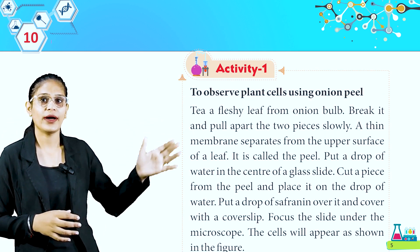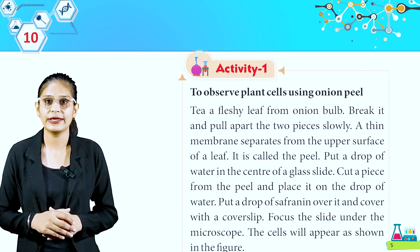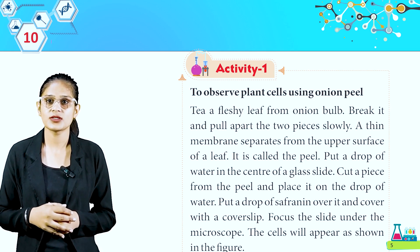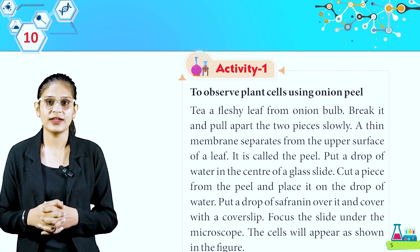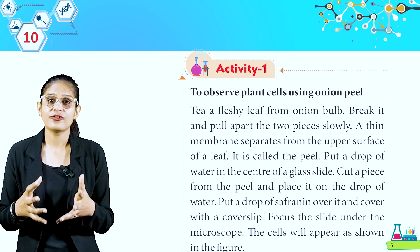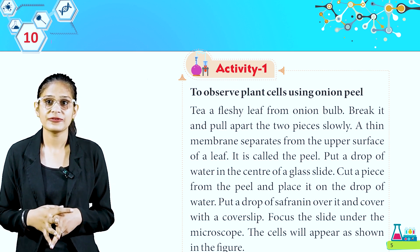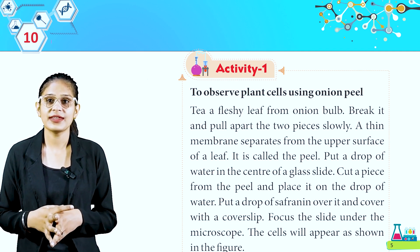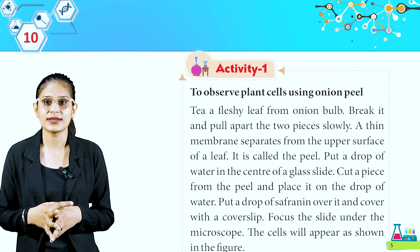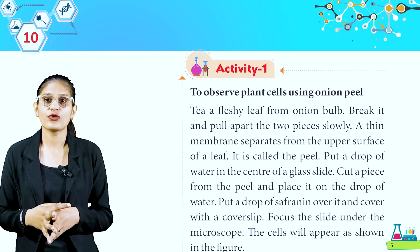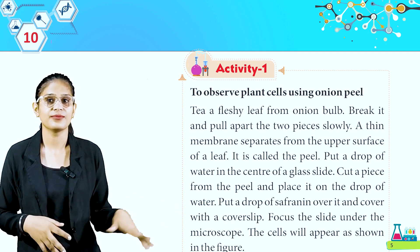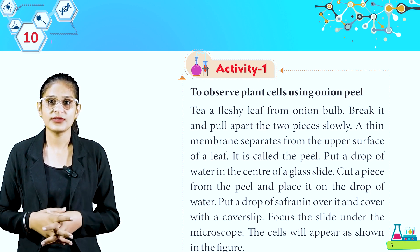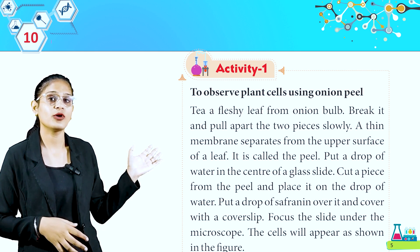Activity 1: To observe a plant cell using onion peel. Take a fleshy leaf from an onion bulb. Break it and pull apart the two pieces slowly. A thin membrane separates from the upper surface of the leaf — it is called the peel. Put a drop of water in the center of a glass slide. Cut a piece from the peel and place it on the drop of water. Put a drop of safranin over it and cover with a cover slip. Focus the slide under the microscope; the cells will appear as shown in the figure. This activity should be demonstrated by the teacher.